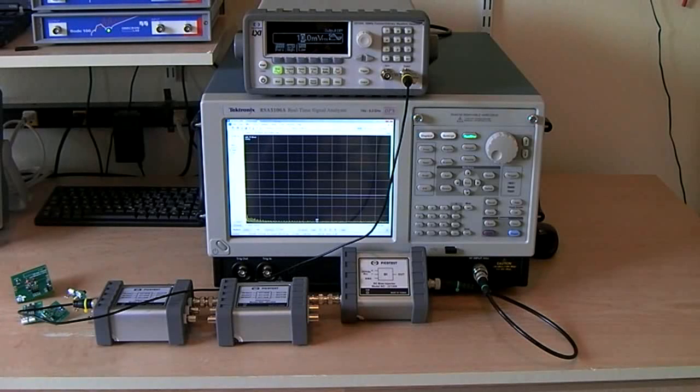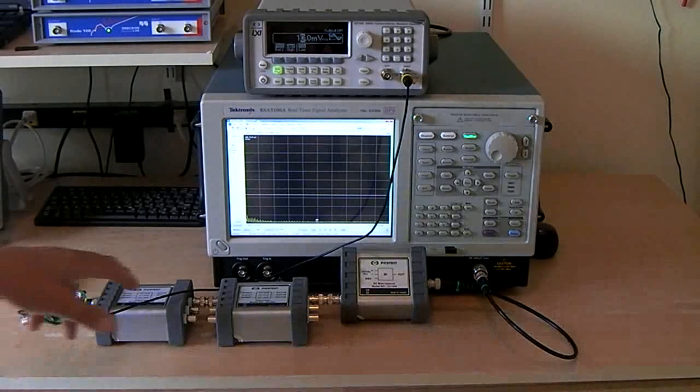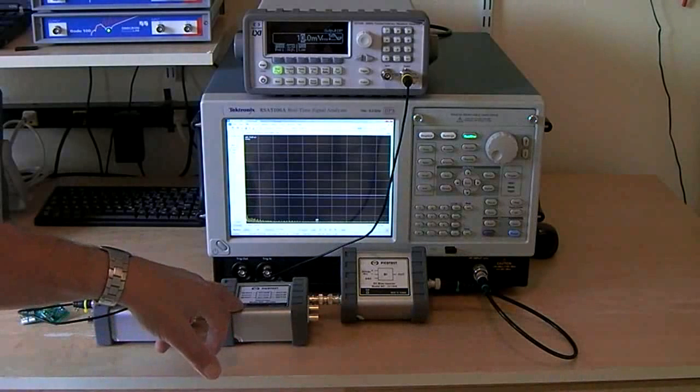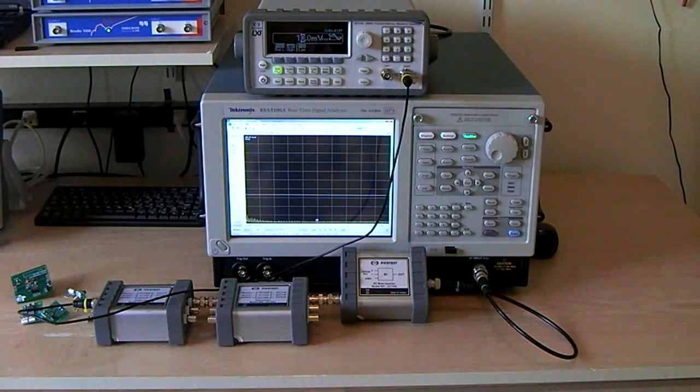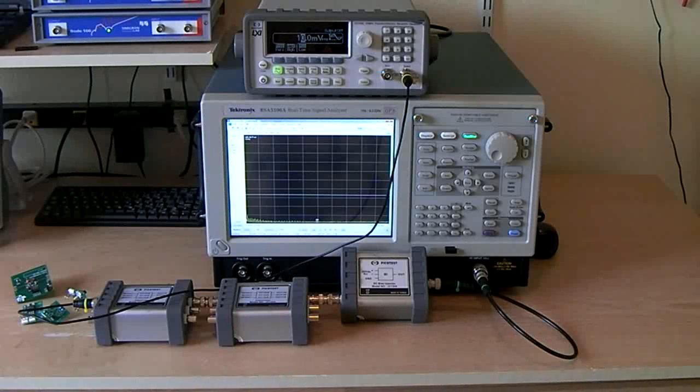Before we can measure noise, the first thing we have to do is validate a setup. In this particular setup we have two PicoTest J2140 attenuators, each one set for 40 dB attenuation, and they're cascaded to give us a total of 80 dB.